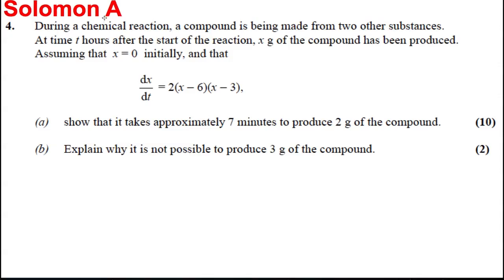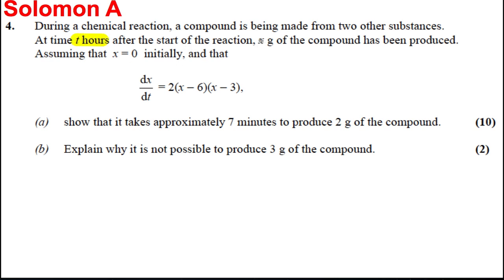Here's another differential equation question. During a chemical reaction, a compound is being made from two other substances. At time T hours after the start of the reaction, X grams of compound has been produced. Assuming that X is zero initially, when time is zero, and that the rate of change of the amount of compound equals 2X minus 6 multiplied by X minus 3, show that it takes approximately 7 minutes to produce 2 grams of the compound. Explain why it's not possible to produce 3 grams.